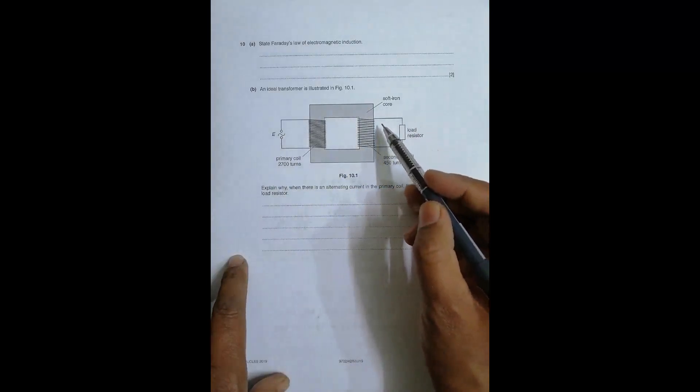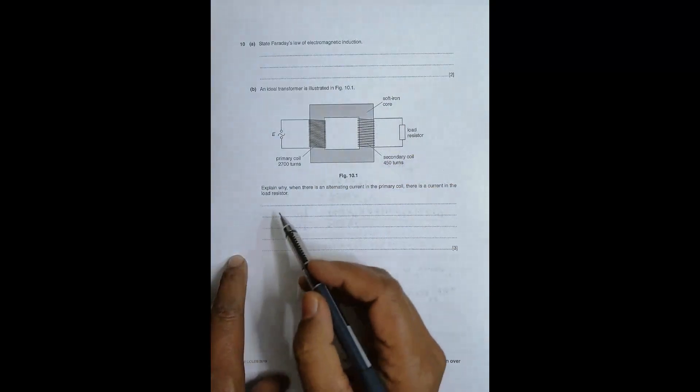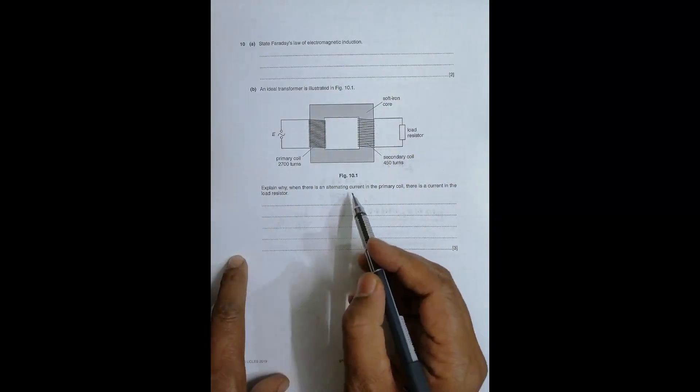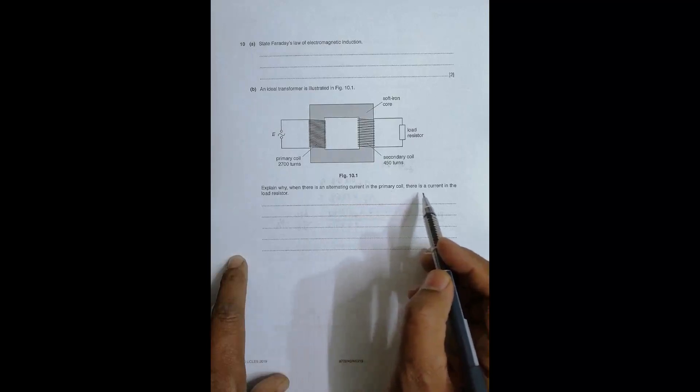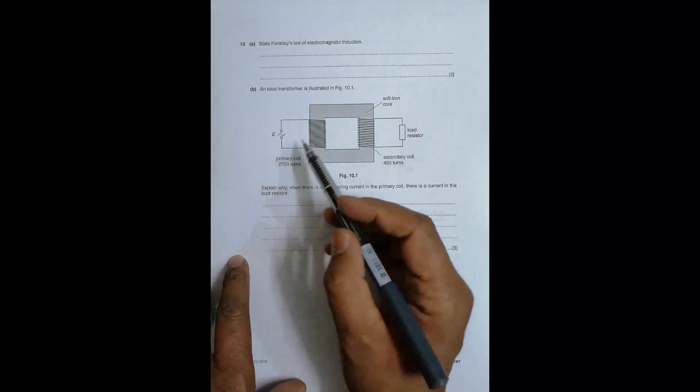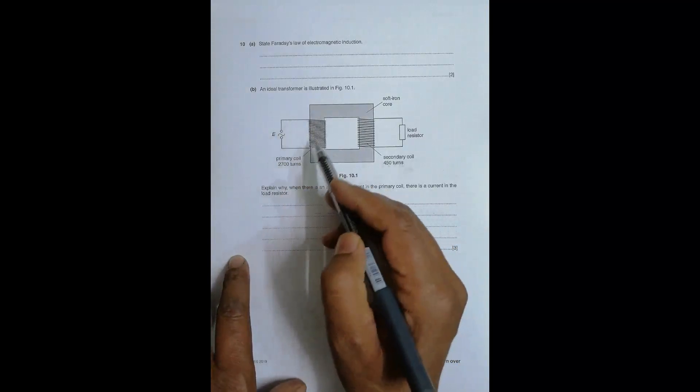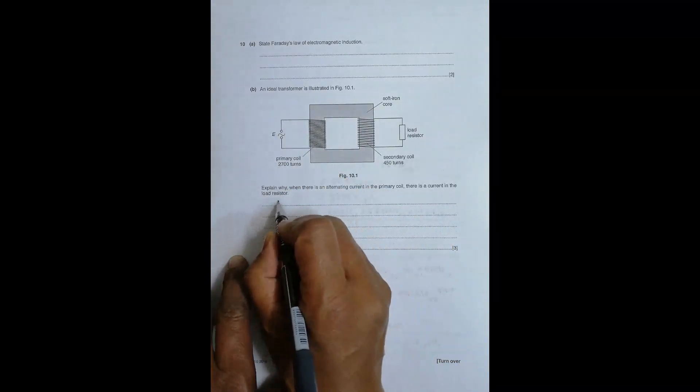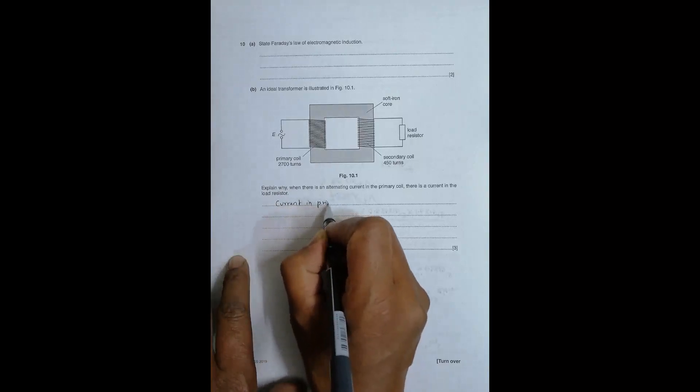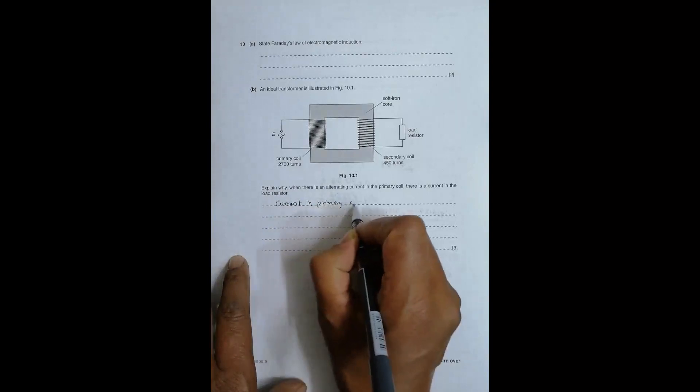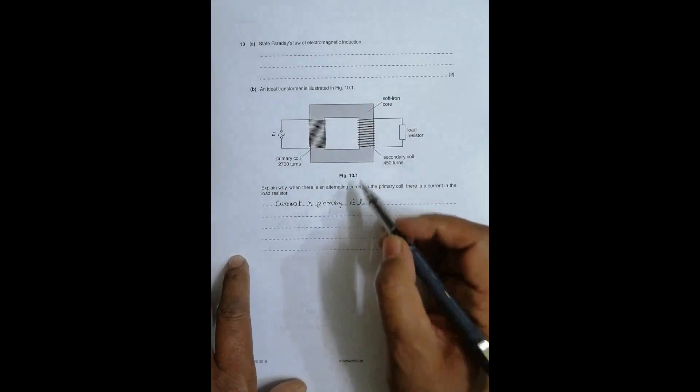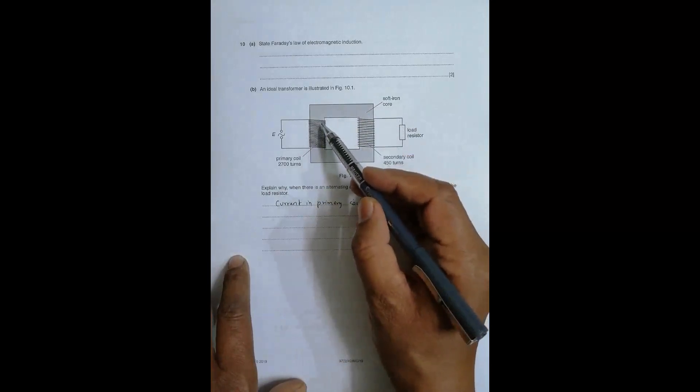The question is: explain why when there is an alternating current in the primary coil, there is a current in the load resistor. The first thing we have to remember is whenever there is current in the primary coil, the primary coil produces field lines.